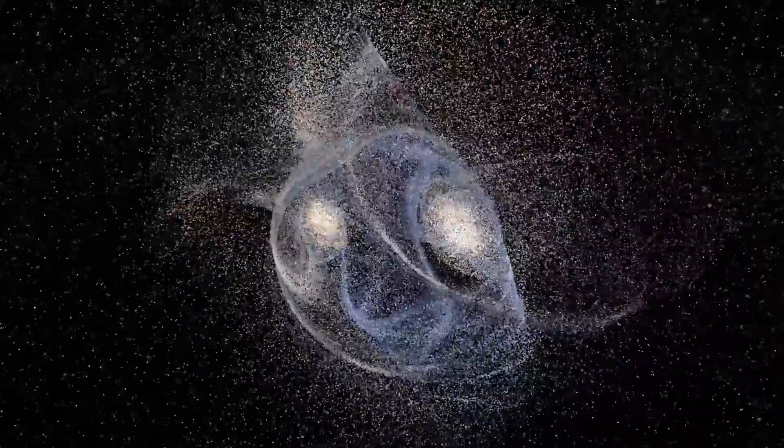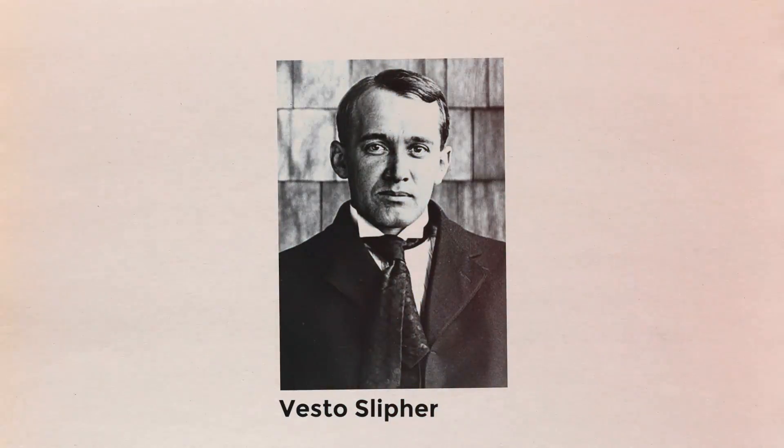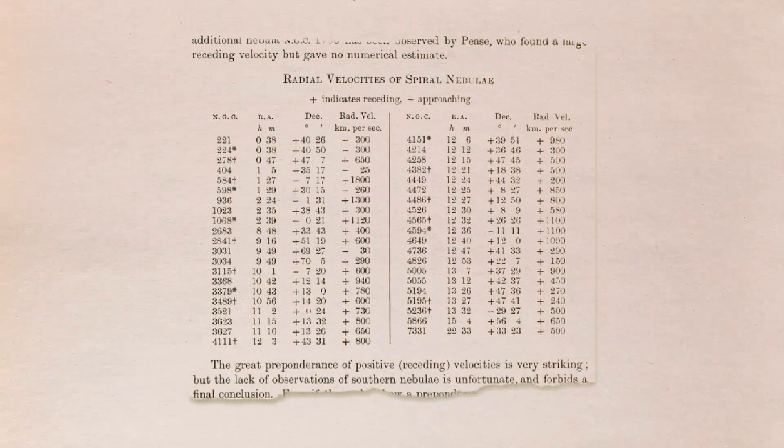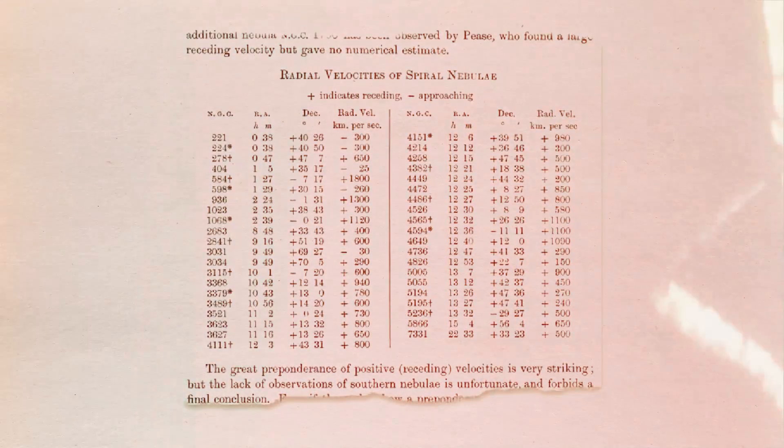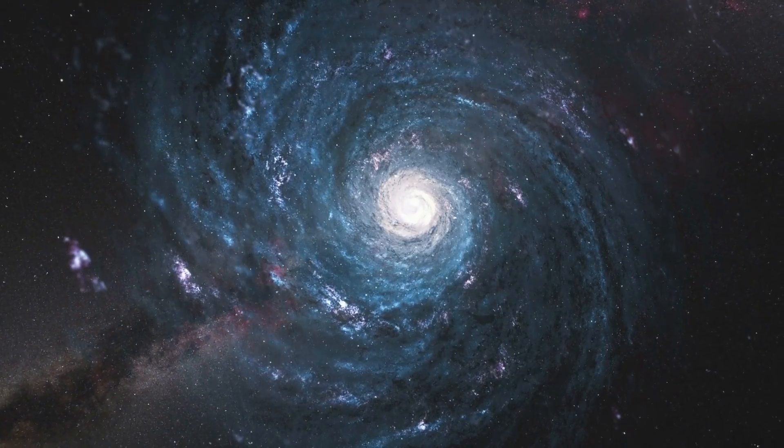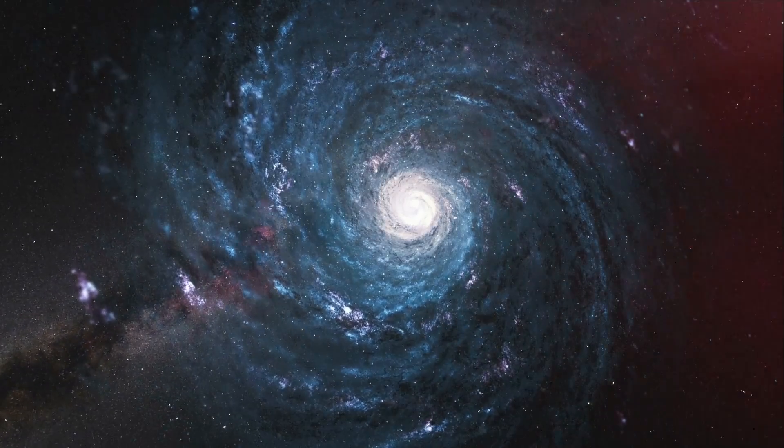The radial velocity of Andromeda was measured by astronomer Vesto Slipher in the early 1900s. To put it another way, he computed the rate at which the galaxy approached or moved away from Earth. Slipher accomplished this by checking for a telltale stretching or compression in the light from Andromeda as it arrived on Earth.